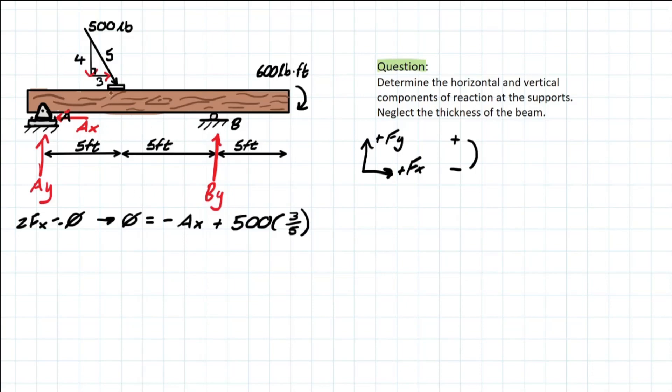Well, an easy way to think about special triangles is that if you are looking for the x component, you multiply your force by the x component over the hypotenuse of the special triangle. And you do the similar thing for y, which we'll see later on in the problem.